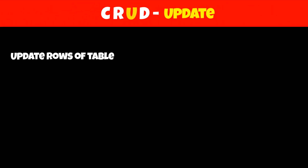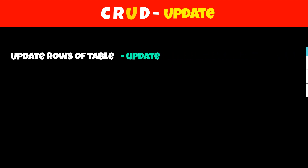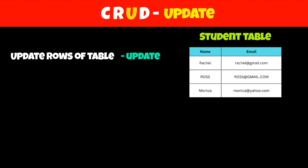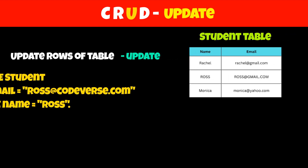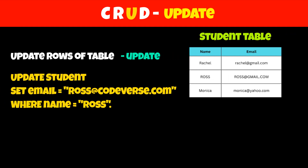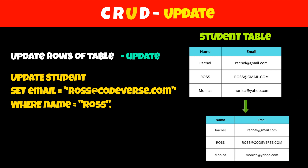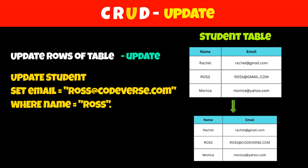The third letter in CRUDE is for Update, which is used to update rows in a SQL table. To update rows, we have to use the UPDATE query. For example, if we want to update the email of ROS, then we can use: UPDATE student SET email = 'ros@directcodewars.com' WHERE name = 'ROS'.